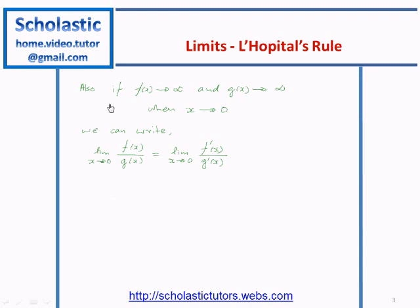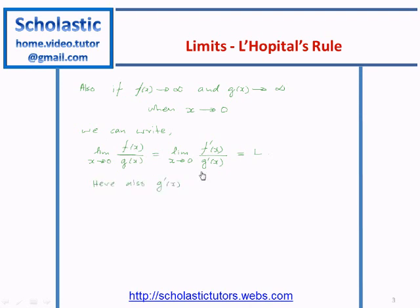This rule also applies to the condition when f(x) tends to infinity and g(x) tends to infinity when x tends to zero. That means if both f(x) and g(x) tend to infinity as x tends to zero, we can't apply the normal rules. So we use L'Hôpital's rule, taking the derivatives f'(x) and g'(x), and evaluate the limit of f'(x) over g'(x) as x tends to zero. Again, we need to make sure that g'(x) is not equal to zero.